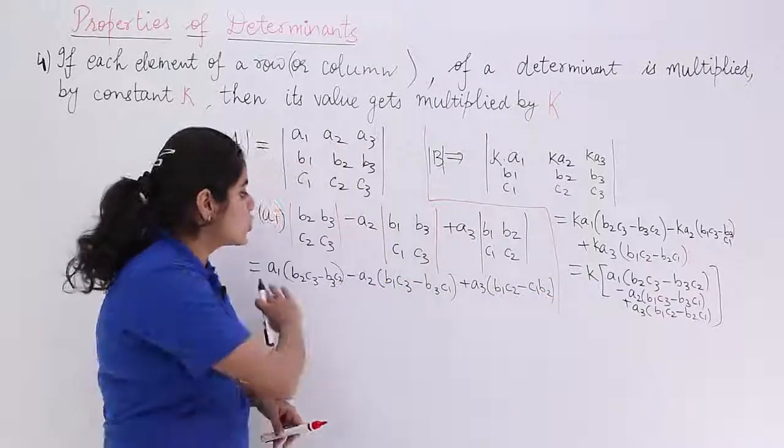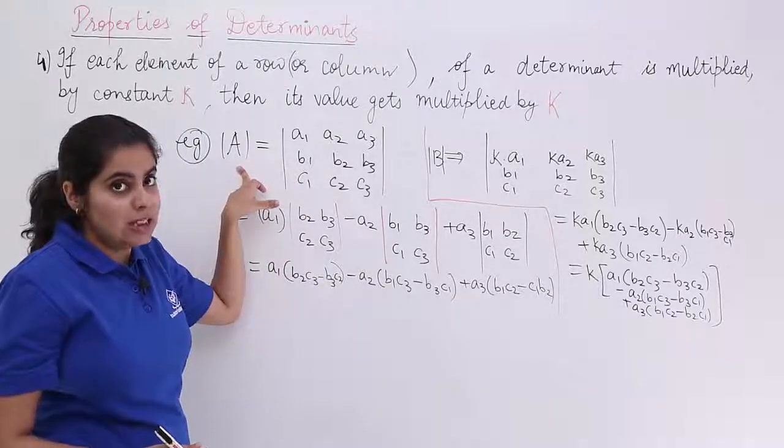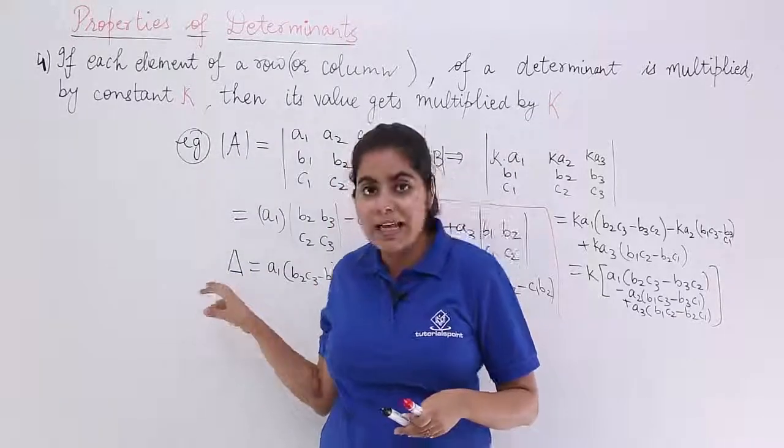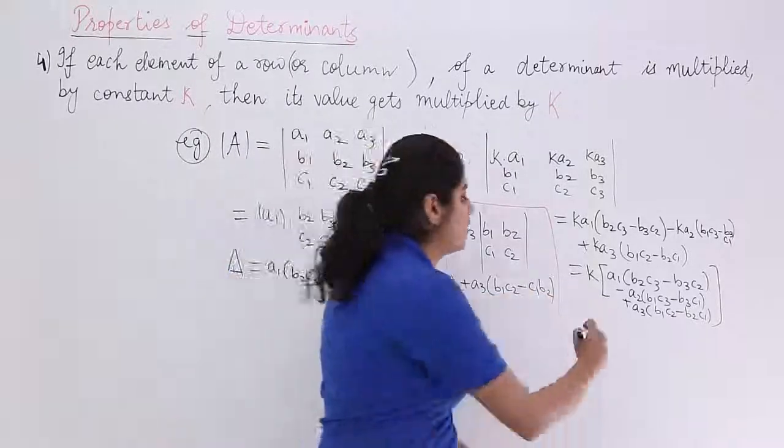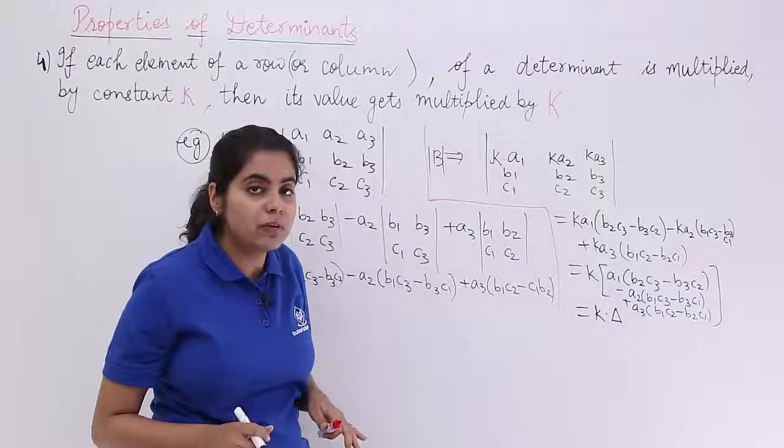So, that means if this whole value that you have is named as del A or if it is say del, I write it here. If it is say del, then this value is what? Then, this value is K into del. That is what we mean by it.